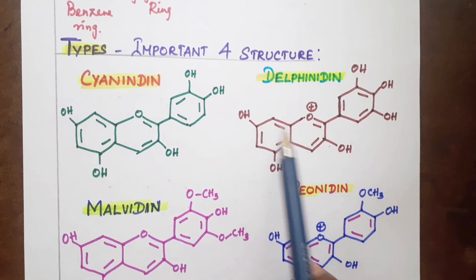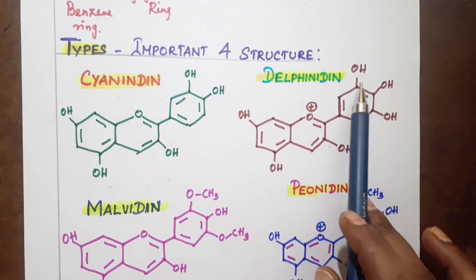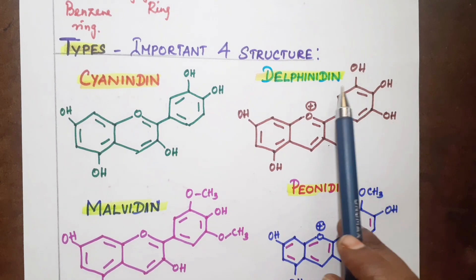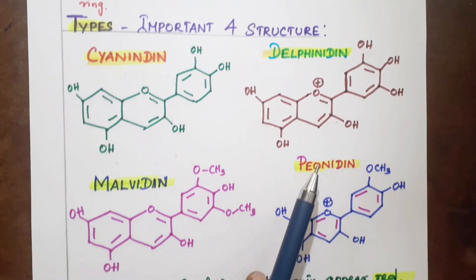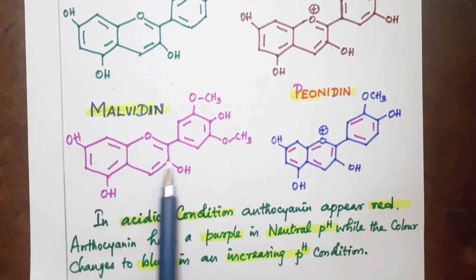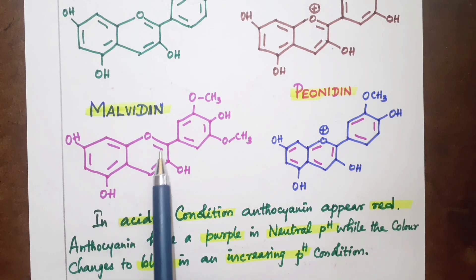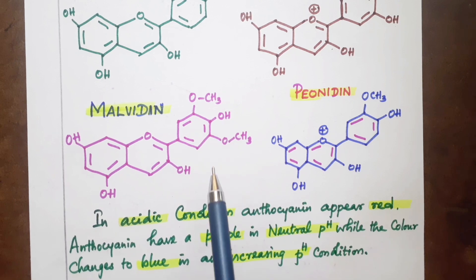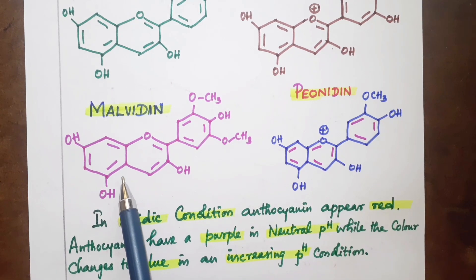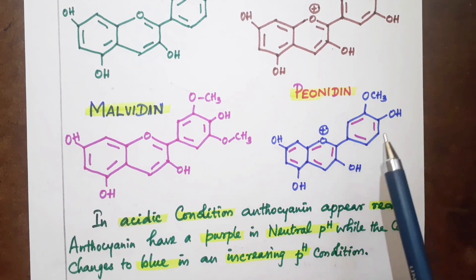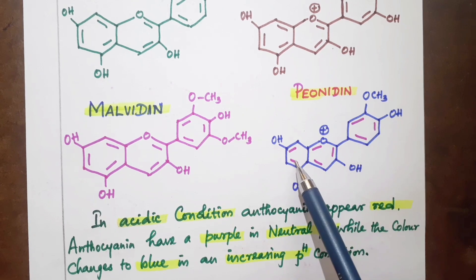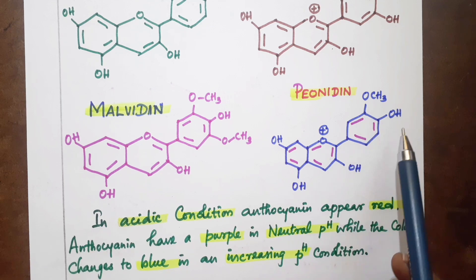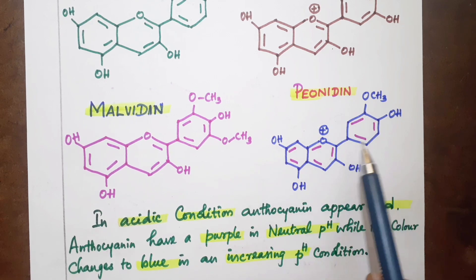Delfinidine also has a benzene ring and a pyrylium ring with OH-OH groups. The next types include Malvidin, which has 2 methoxy groups on the benzene ring, and Peonidin, which similarly features a pyrylium ring and a methoxy group in its structure.